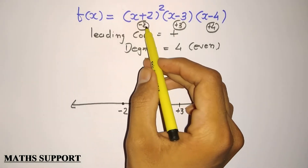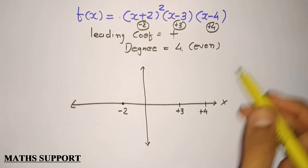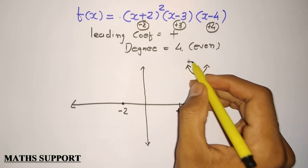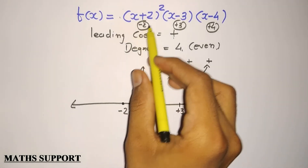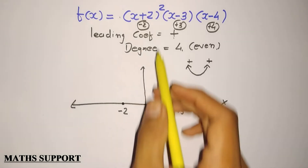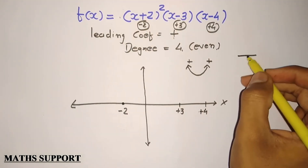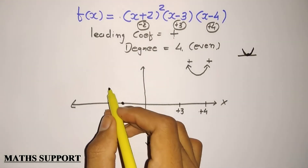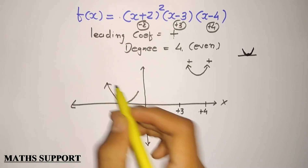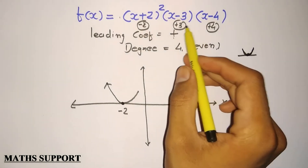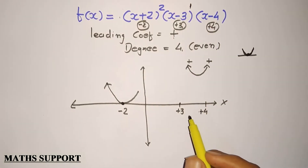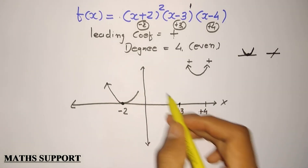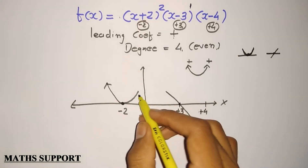We are starting from minus two. The leading coefficient is positive and degree is even, so both starting and ending points are positive — both ends go upward. Minus two has multiplicity two, so the graph passes like a parabolic curve at that point. At plus three, the multiplicity is one, so the graph passes simply like a straight line. It comes from the upward side and we connect these points with a curve.